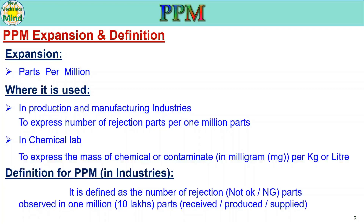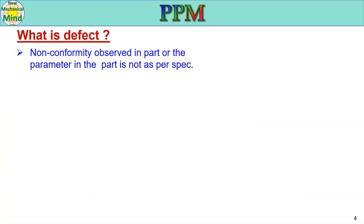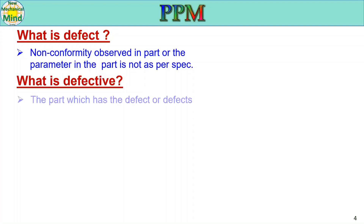Now we are going to see about what is a defect. A defect means a non-conformity observed in a part, or a parameter in the part that is not as per specification. If any parameter is not meeting the drawing specification, it is called a defect. What is defective? Most people think that defect and defective are the same, but there is a difference. The part which has one or more defects is called a defective part.